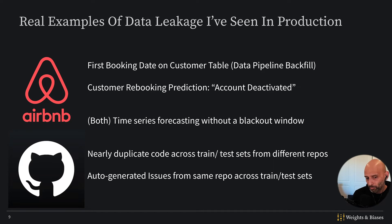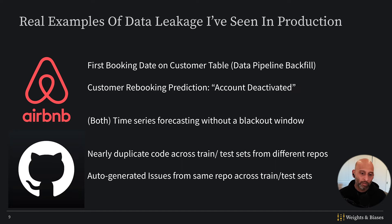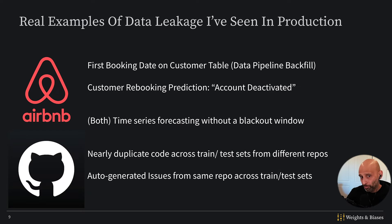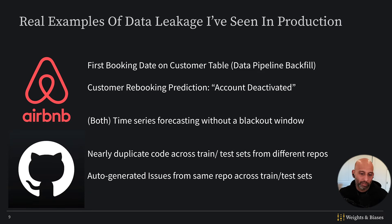At GitHub, we had language models being trained on code. As you might imagine, even across different repos there tends to be duplicate code — people use each other's code, there's a lot of copy-pasting, and some languages vendor code as libraries. So we had a lot of nearly duplicate code across train and test sets, similar to this dataset where we have images that are almost the same because they're taken from the same camera. We had the exact same problem at GitHub, and it was really tricky to find.